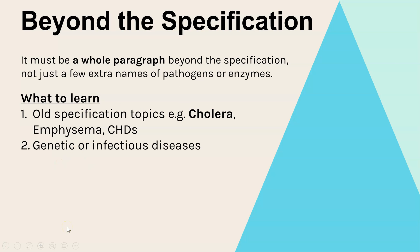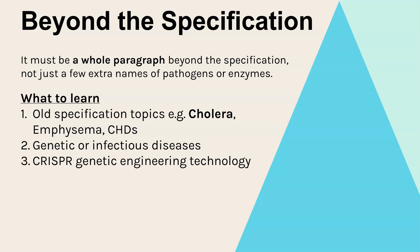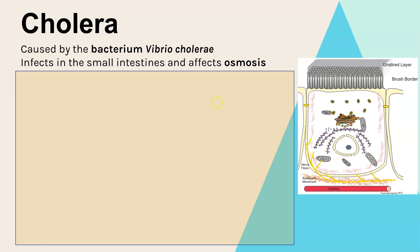You could also find out about a genetic disease or infectious disease because that might link to a title. Or for gene technology and the importance of DNA and RNA, you could learn about CRISPR, which is a relatively recent genetic engineering method. But the one I'm going to focus on — and which I think is your best option — is cholera. I'll talk you through what used to be on the specification and what to learn to write for a paragraph, then show you which essay titles it would be relevant for.